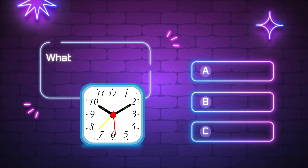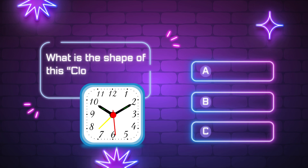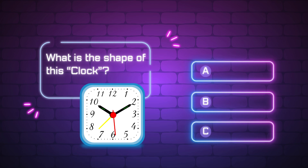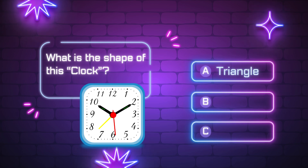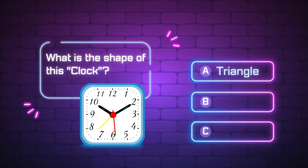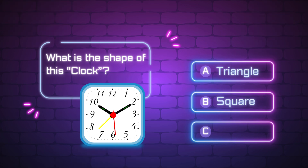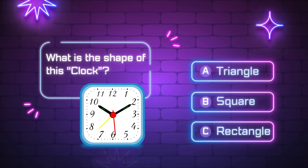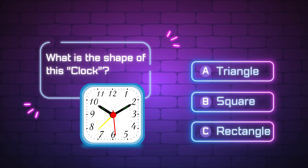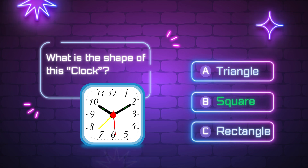What is the shape of this clock? A, triangle. B, square. C, rectangle. Yes, it is a square.